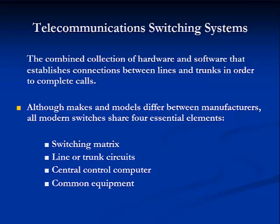Third of the essential elements is the central control computer. This is the part of the switch that interprets incoming data, retrieves data, and issues commands to the rest of the switch. The central control computer typically includes multiple processes among other components. And lastly, the common equipment are the components necessary to keep the switch running at all times, such as a power supply, battery, testing equipment, and distribution frames for incoming wires.